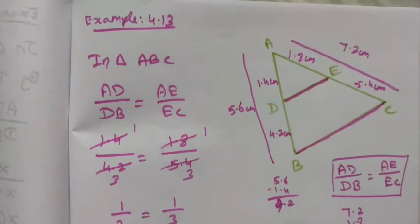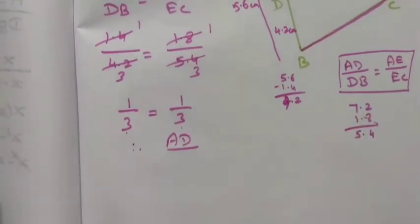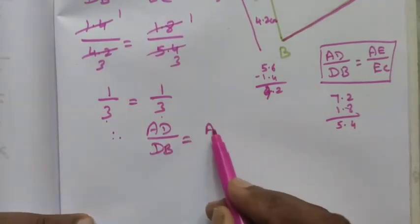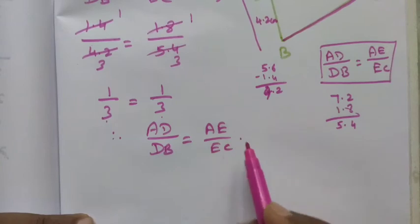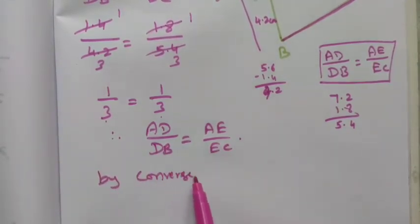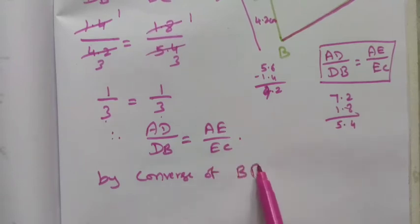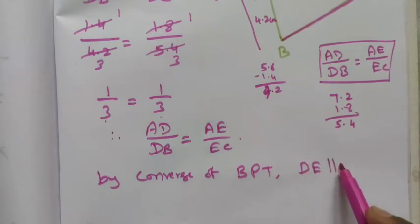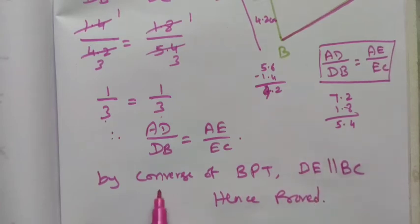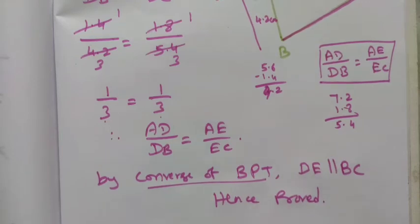Therefore, AD divided by DB is equal to AE divided by EC. By the converse of the Basic Proportionality Theorem (BPT), DE is parallel to BC. Hence proved. By the converse of BPT, we can say DE is parallel to BC. Thank you students.